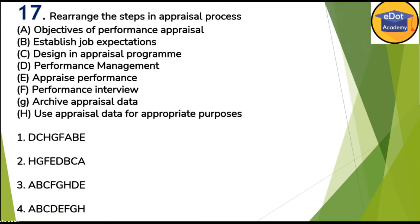Question seventeen: arrange the steps in the appraisal process — this is from Human Resource Management. The correct order is: (A) objective of the performance appraiser, (B) establish job expectations, (C) design the appraisal program, (D) performance management, (E) appraise performance, (F) interview, (G) archive appraisal data, and (H) use appraisal data for appropriate purpose. This sequence is already correctly arranged A through H — so option four is correct.